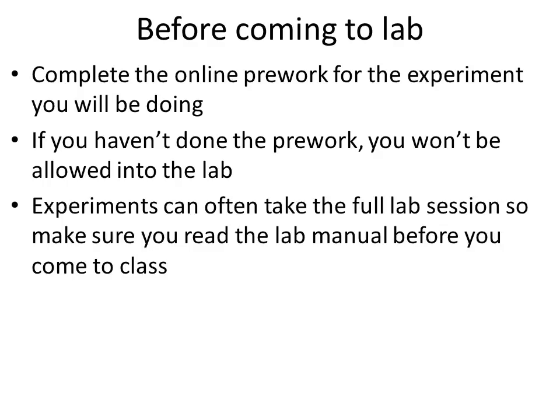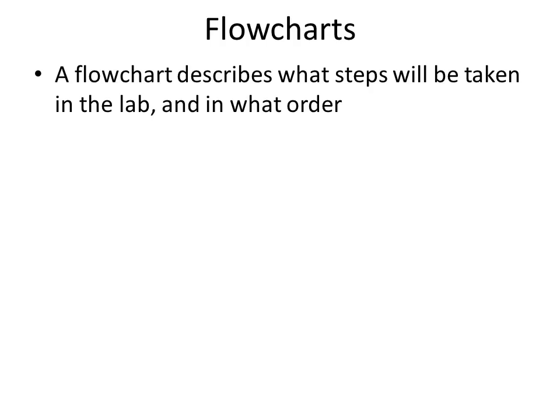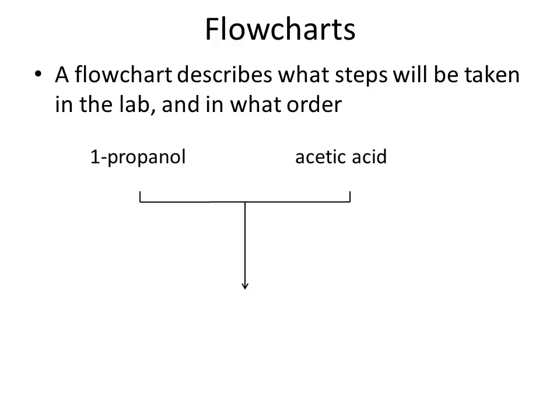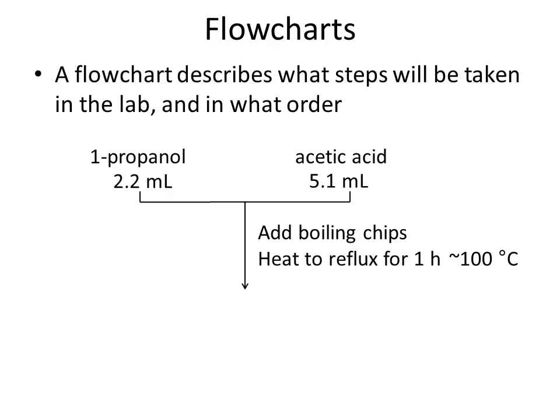Experiments can often take the full four hour lab session so it's really important that you've thought about the experiment and read the lab manual before you come to class. One way you can prepare for lab is to prepare a flowchart. You must prepare a flowchart for each experiment and have it signed off by a demonstrator before you can start working. A flowchart describes what steps you will be taking in the lab and in what order — for example, in one step you may be mixing 1-propanol with acetic acid. You should also include on your flowchart the mass or volume of any reagent you're using and any other important information so that you know quickly what you need to be doing at any time in the lab.